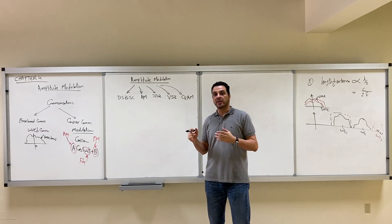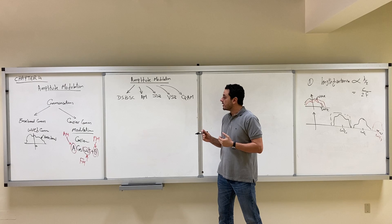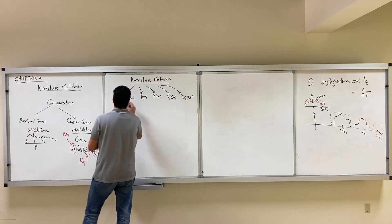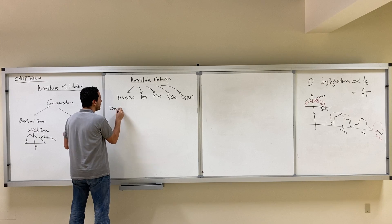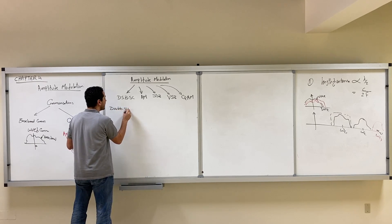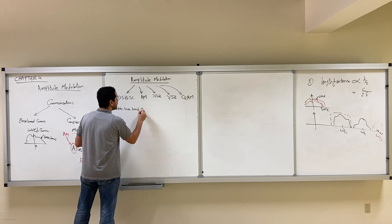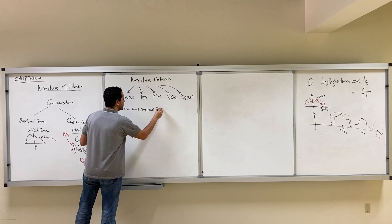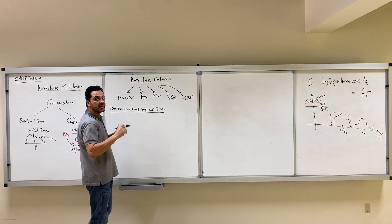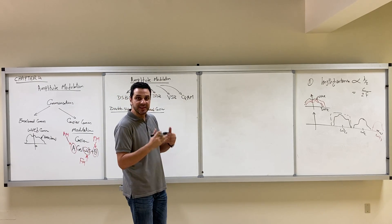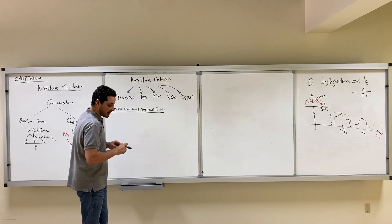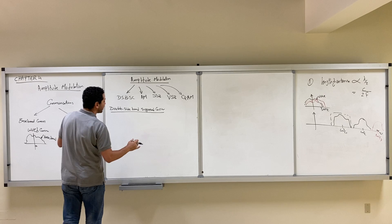We are going to study the difference between each type, and go over the details of all of them. Let's start with the first category, which is double sideband suppressed carrier. The name will be clear later — when we finish studying this type, it will be clear why we call it double sideband suppressed carrier.